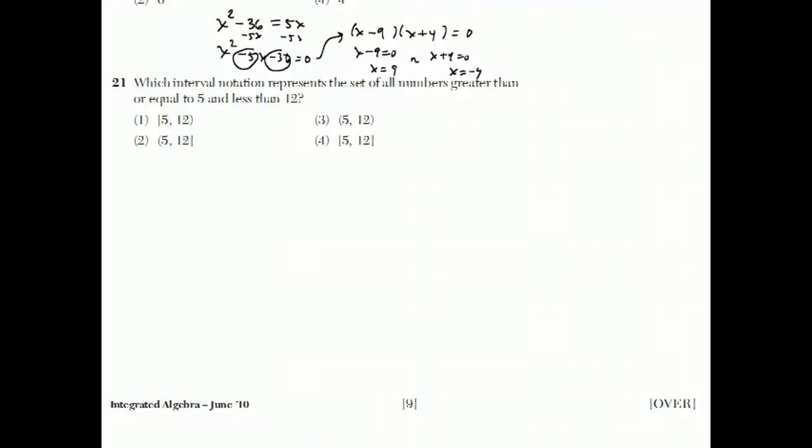Question 21 says, which interval notation represents the set of all numbers greater than or equal to 5 and less than 12? So, numbers greater than or equal to 5 and less than 12 would be integers like 6, 7, 8, 9, 10, 11. 5 would count, but 12 wouldn't count.